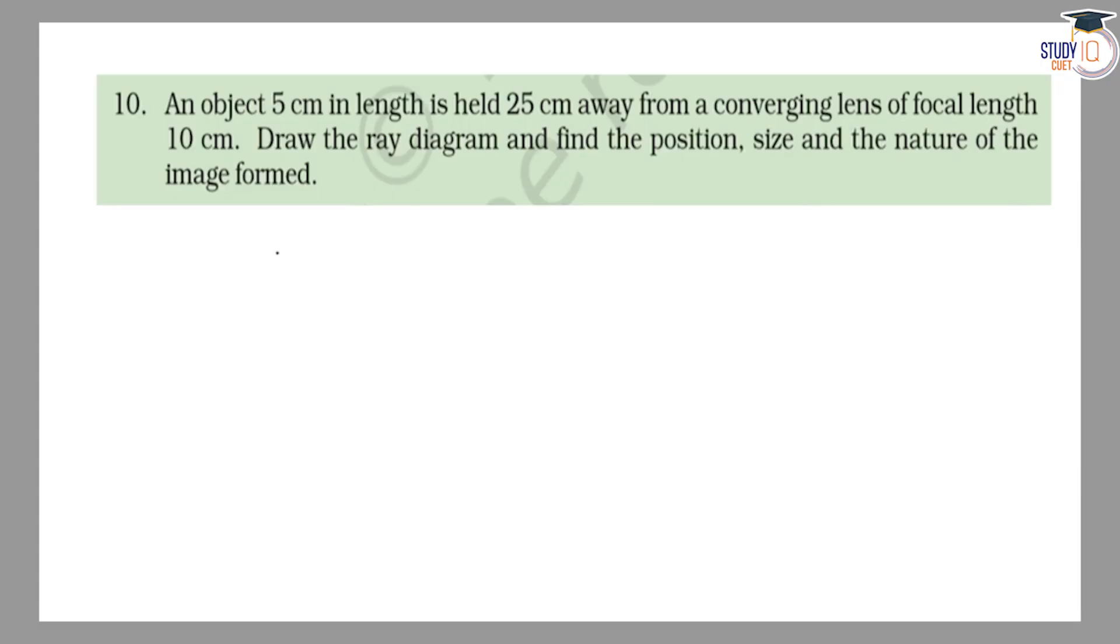CBSC class 10 question number 10: An object 5 cm in length is held 25 cm away from a converging lens of focal length 10 cm. Draw the ray diagram and find the position, size and nature of the image formed.